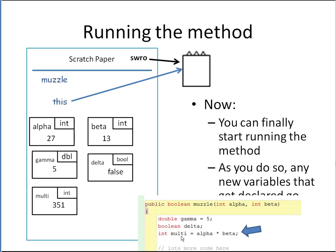Now we have 'multi = alpha * beta'. Evaluate the right-hand side, put it in the left. This declares the variable, makes a box for it — type int, called multi — then it evaluates alpha times beta. It looks and finds alpha is 27 and beta is 13, multiplies them out, and puts the result into multi.